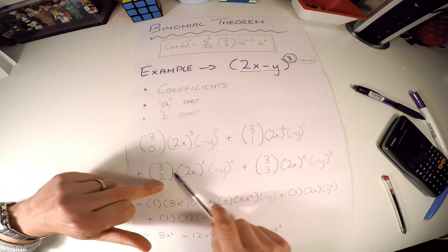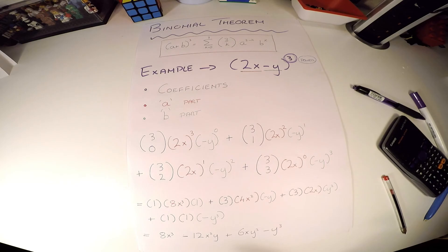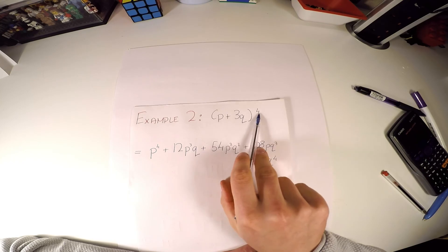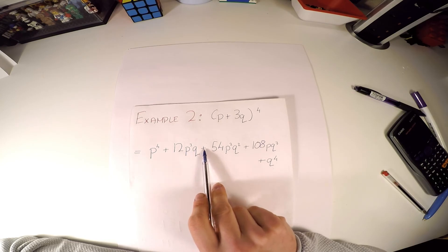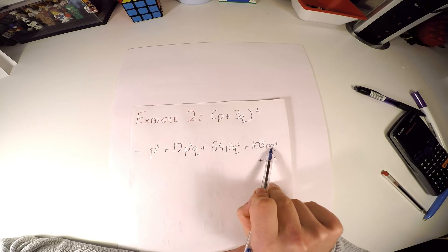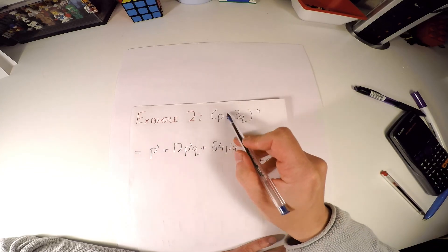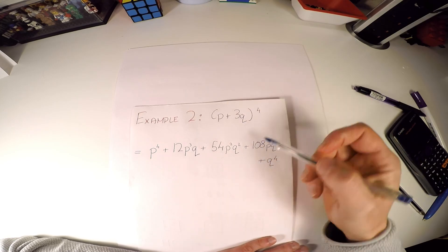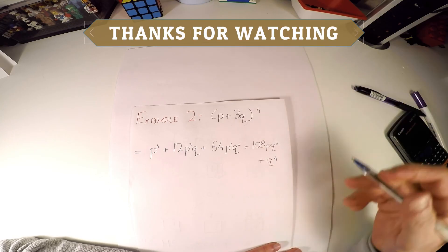Now for practice, here's one more example to try: expand (p + 3q) to the power of four. Your answer should be p⁴ + 12p³q + 54p²q² + 108pq³ + 81q⁴. Here, the a-part is p and the b-part is 3q, with a power of four — so we're going to have five terms: powers four, three, two, one, and zero. Try that and see how you get on.